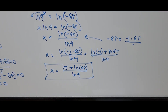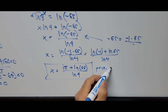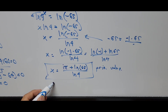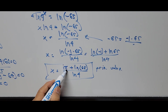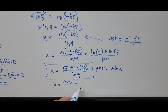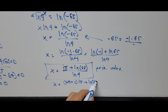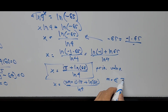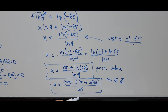This is just the principal value of x. There are actually infinitely many complex values. The general form is x = (2m + 1)·πi + ln(65), all divided by ln(4), where m is any integer. This gives the infinite complex values of x.